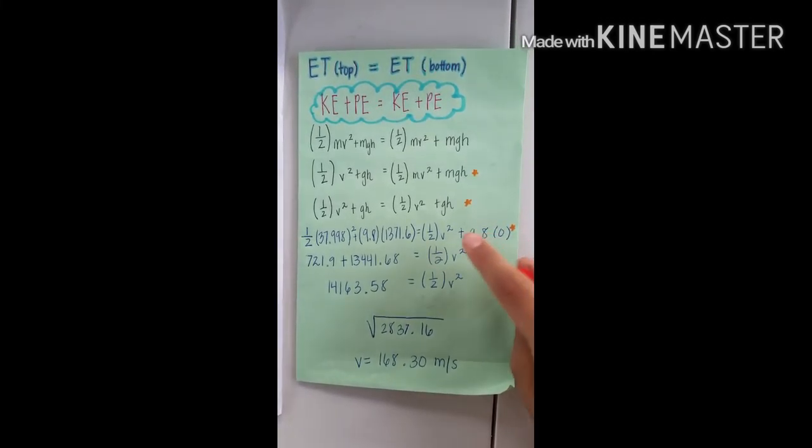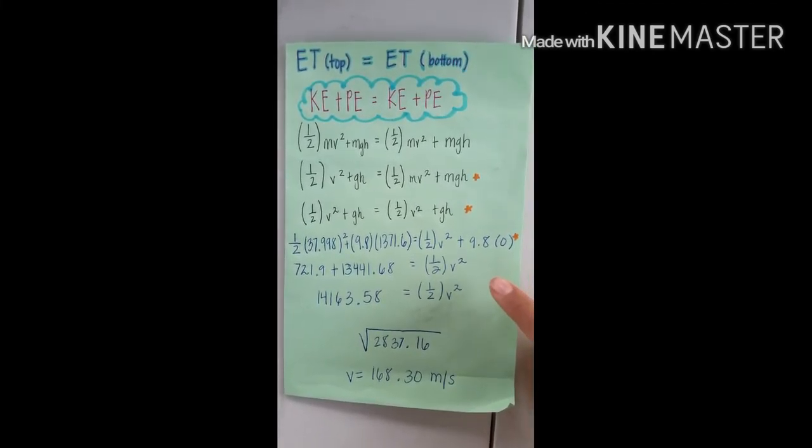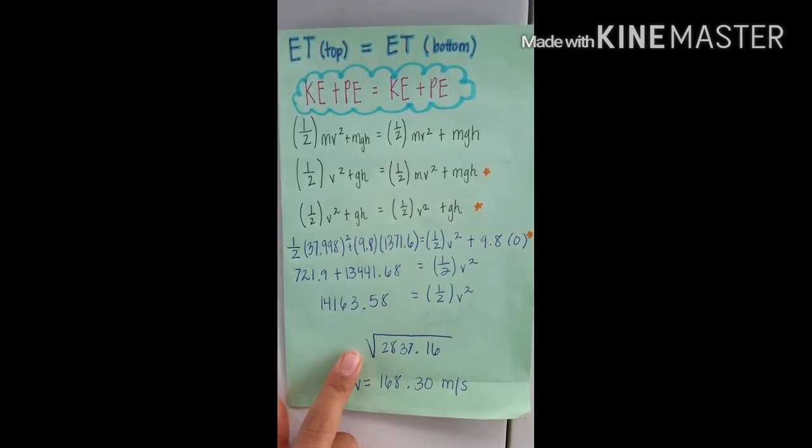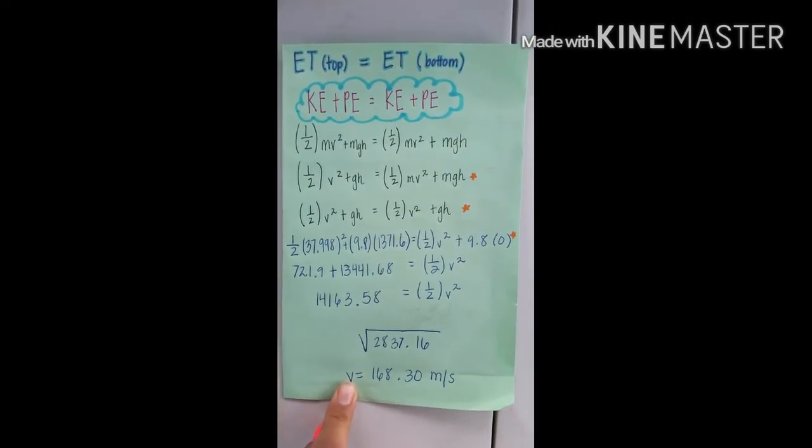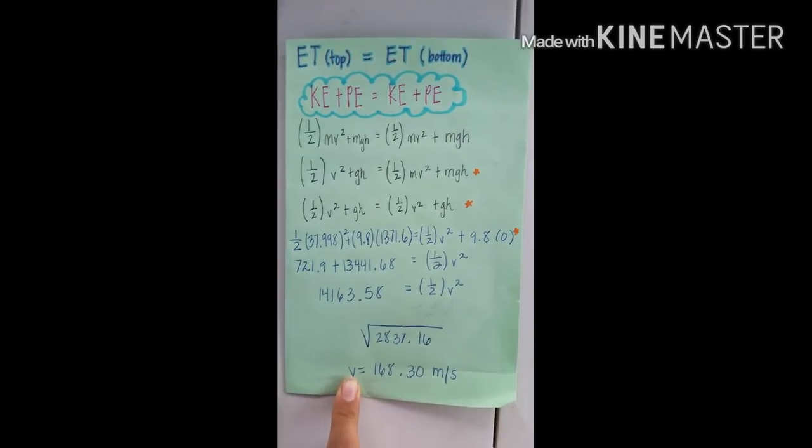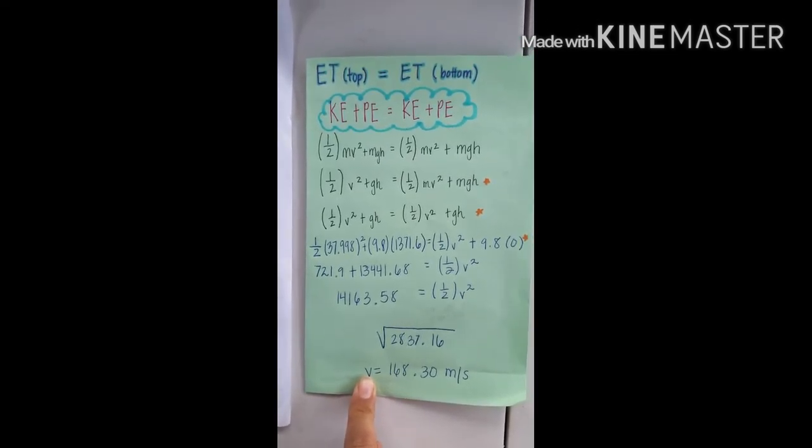Once we do the math here, we will get this number right here. We will square root it. And the velocity at the bottom of the first hill is 168.30 meters per second.